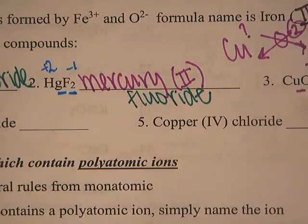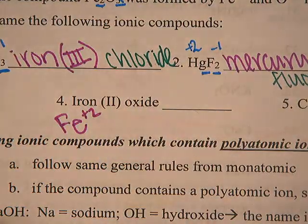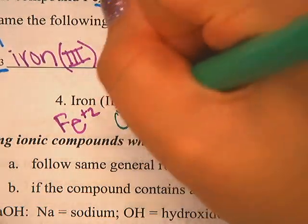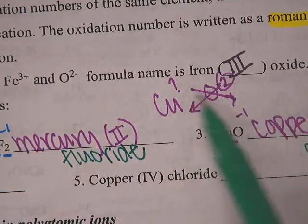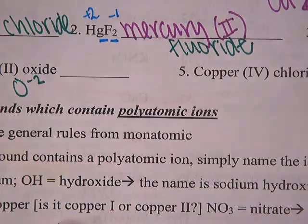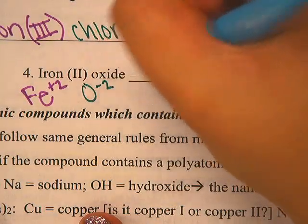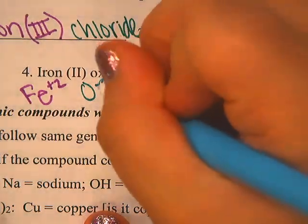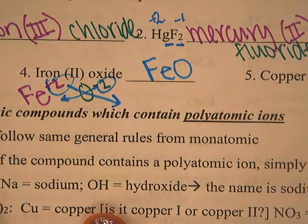Now let's go the other direction. If I have Iron(II) oxide, I start with iron, which is Fe, with an oxidation number of plus 2. Oxide comes from oxygen, which is minus 2. So I crisscross: the 2 becomes the subscript on iron, and the 2 becomes the subscript on oxygen — Fe₂O₂ — which then reduces down to FeO.